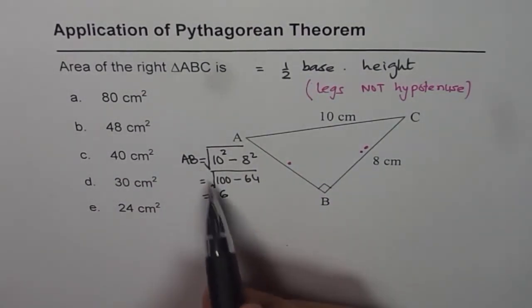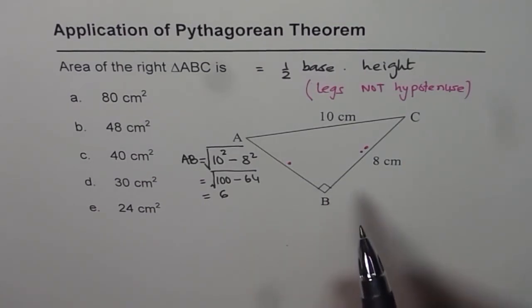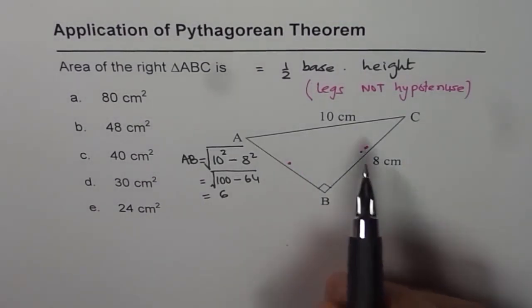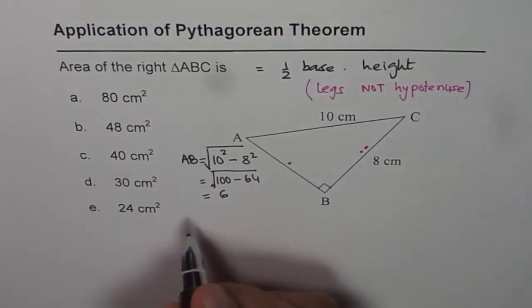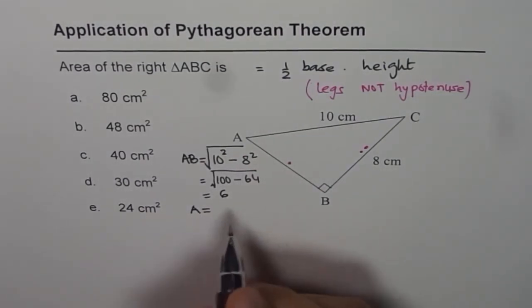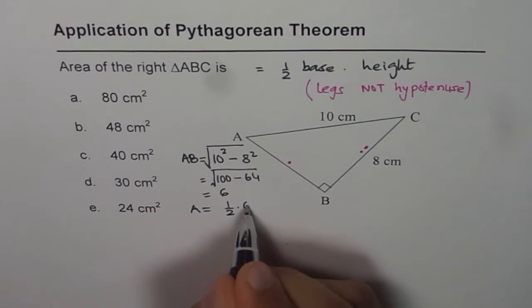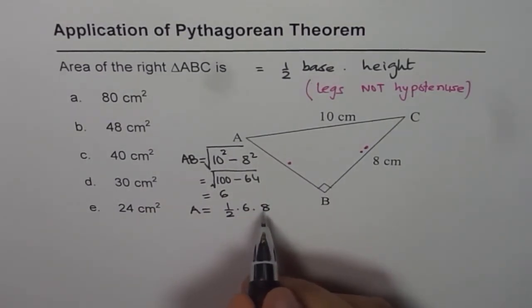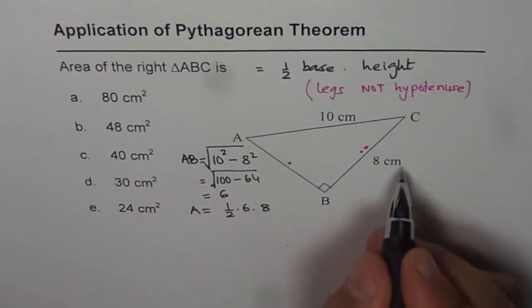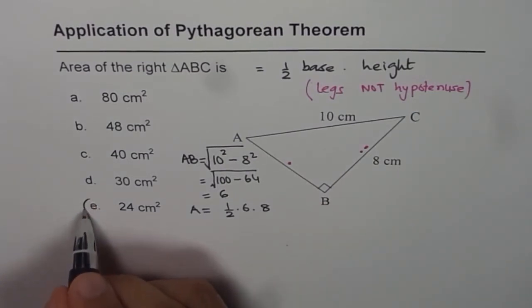Once we know what AB is we can calculate the area: 6 times 8 divided by 2. So area equals half of 6 times 8. 3 times 8 is 24 centimeters squared. Answer is E.